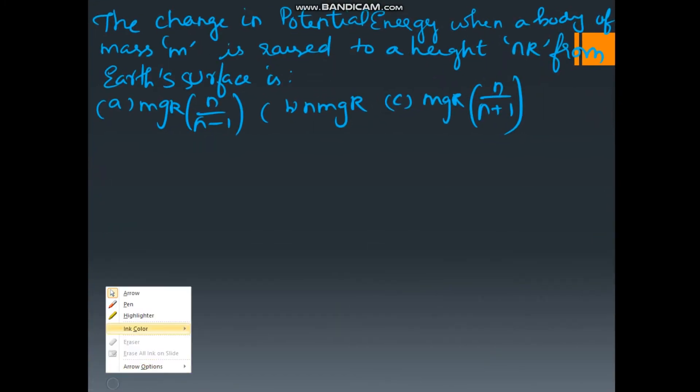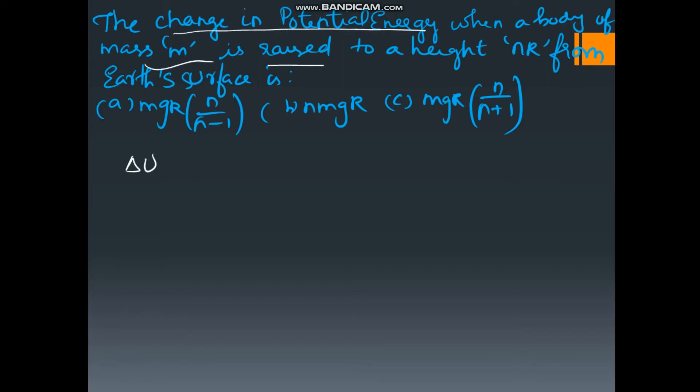Now, let us see the next numerical. The change in potential energy delta U when a mass M is raised to a height H of nR from Earth's surface. I have said in the previous video that whenever they are giving a mass M is raised from the surface of the Earth to a height H, then you want to use the formula MGH by 1 plus H by R.